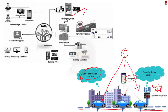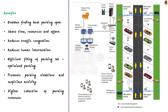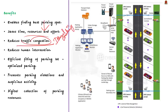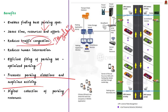The benefits of smart parking include: the public can find the best available parking spot while saving time, resources and effort; it helps reduce traffic congestion caused by illegal parking; it reduces human intervention and enables optimized use of parking lots; it helps prevent parking violations and suspicious activity by blacklisting suspicious vehicles; and it enables digital collection of parking revenues. This can be quoted as an example in Mains or may appear as a Prelims question.